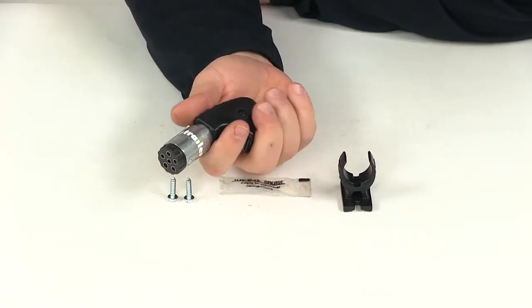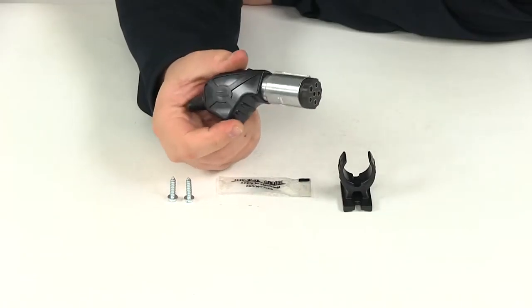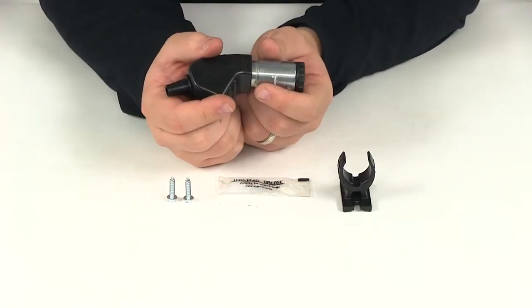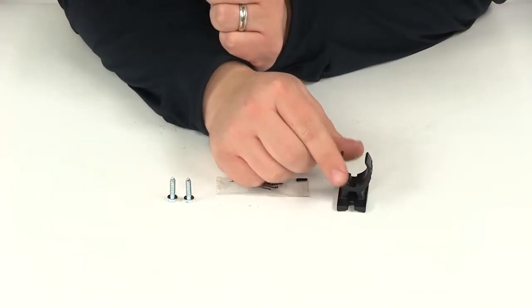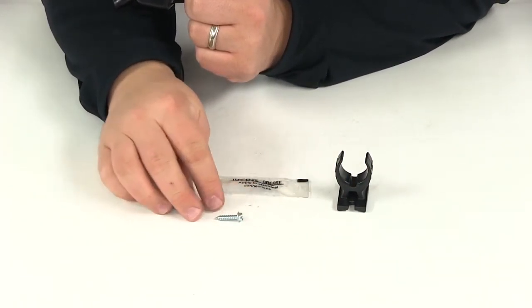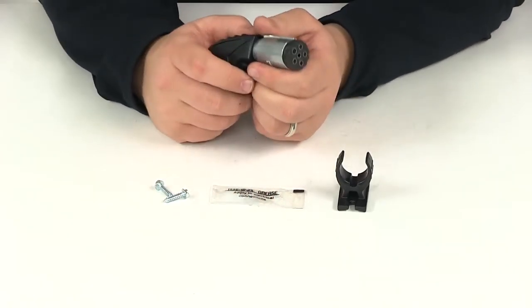It's going to make it easier when it comes to connecting and disconnecting the six-way round trailer connector. This is going to be made from corrosion resistant materials. It does come with the mounting bracket and the hardware as well as a grease packet for the connection points.